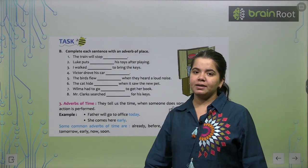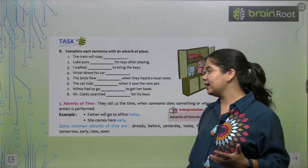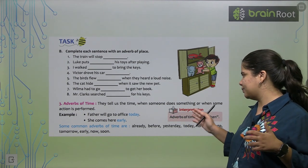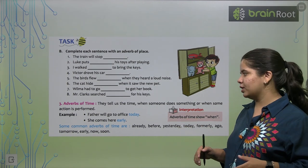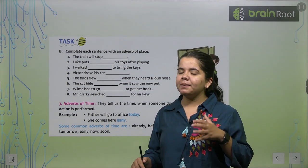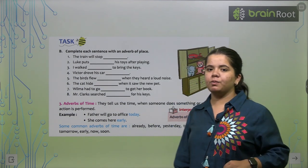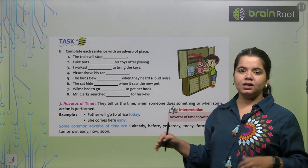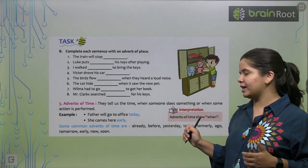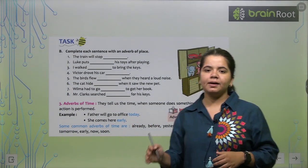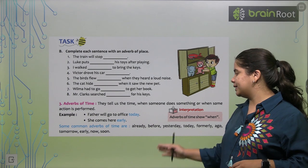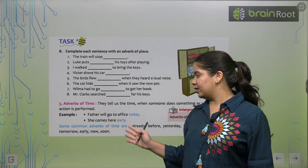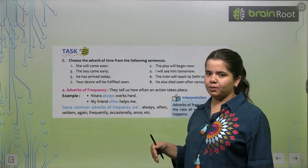Now the next is adverb of time. Place is about which place it happened. Time is about when it happened. What time it happened? It tells us the time when someone does something or when some action is performed. When a particular action is performed, that is our adverb of time. Like, father will go to the office today. She comes here early. These are in our adverb of time category. Some common adverbs of time are already, before, yesterday, today, formerly, ago, tomorrow, early, now and soon. These are our adverbs of time.